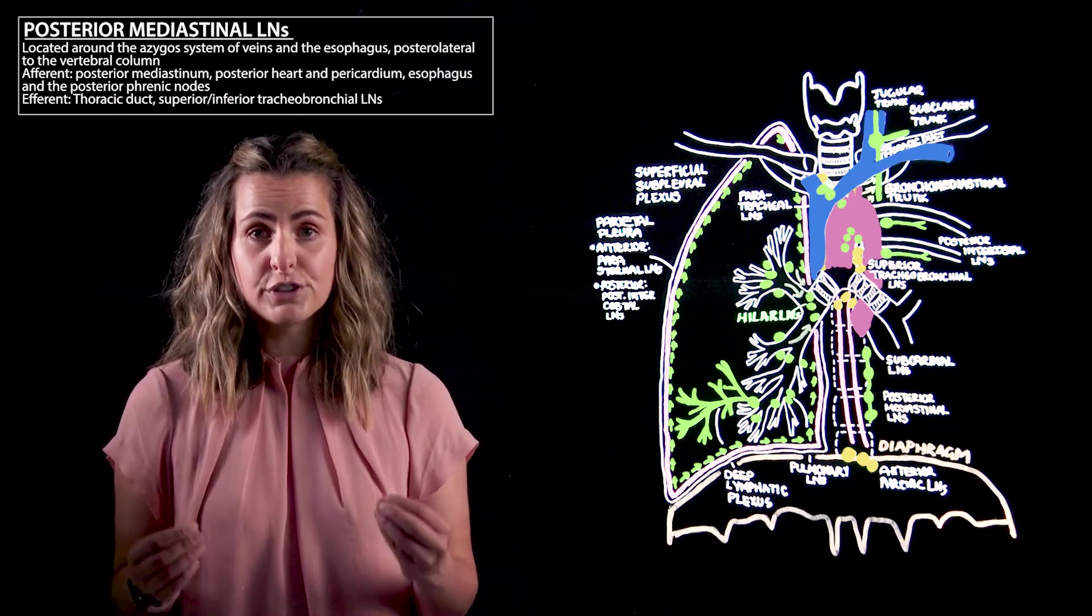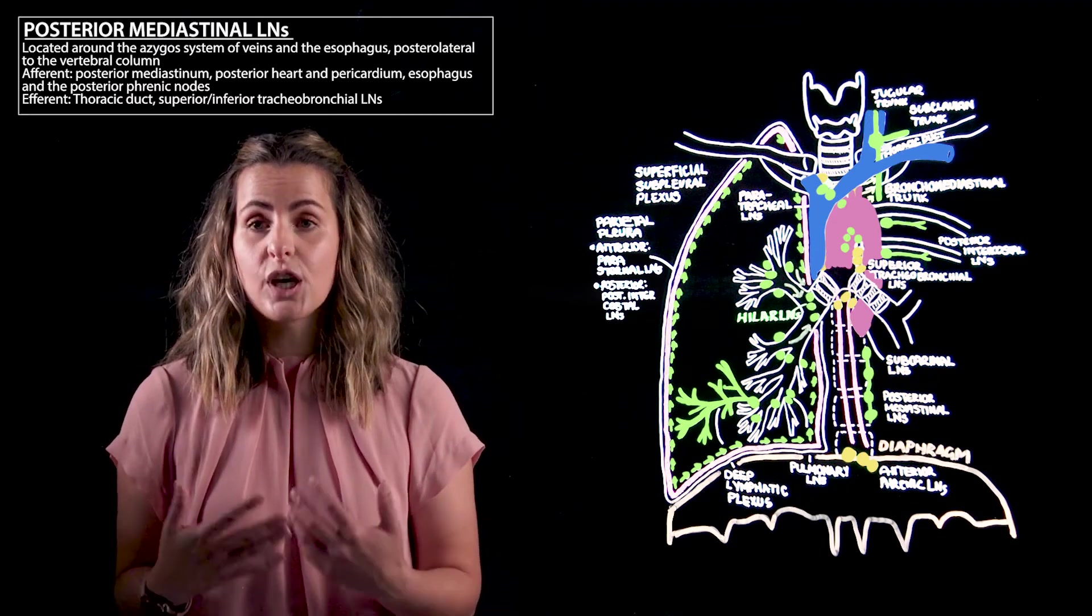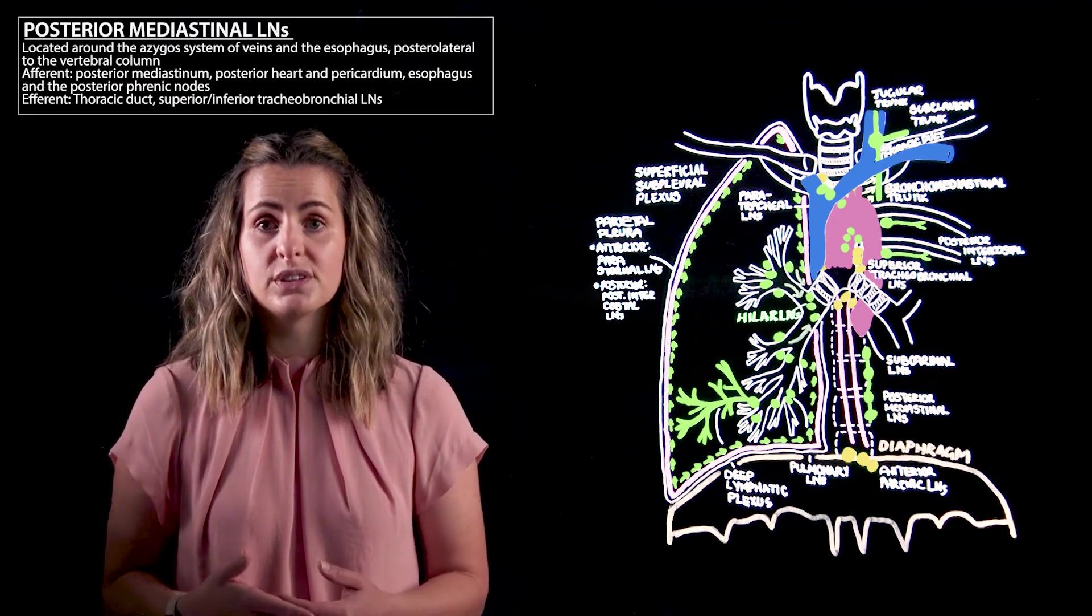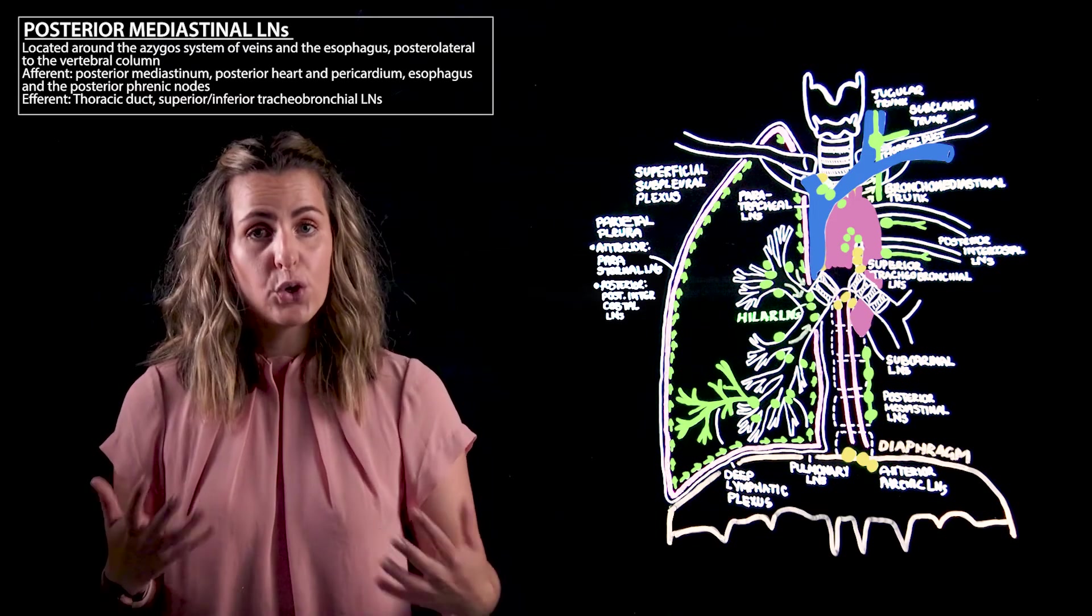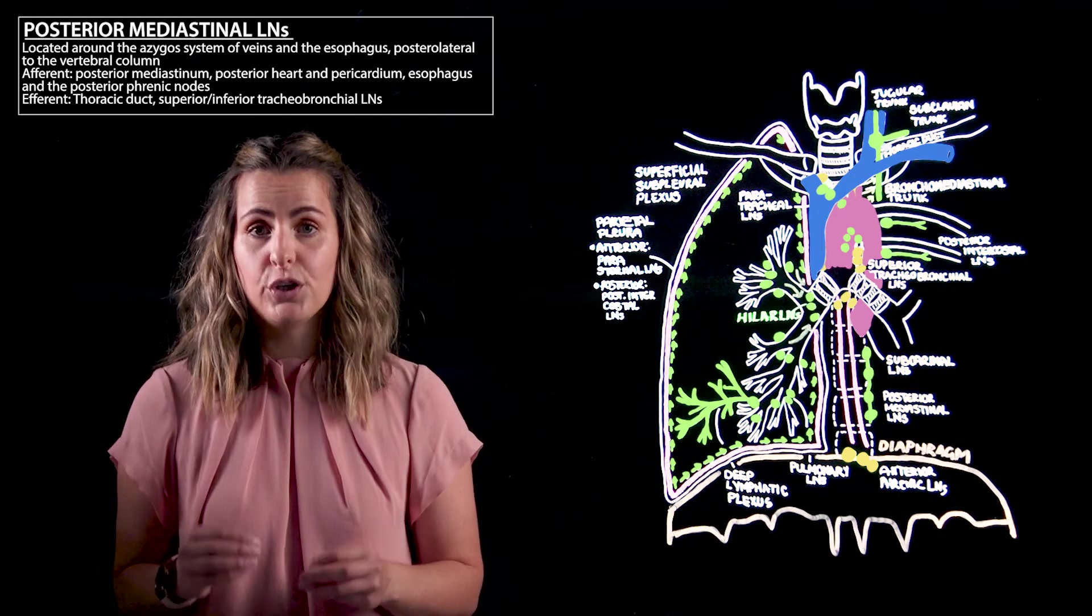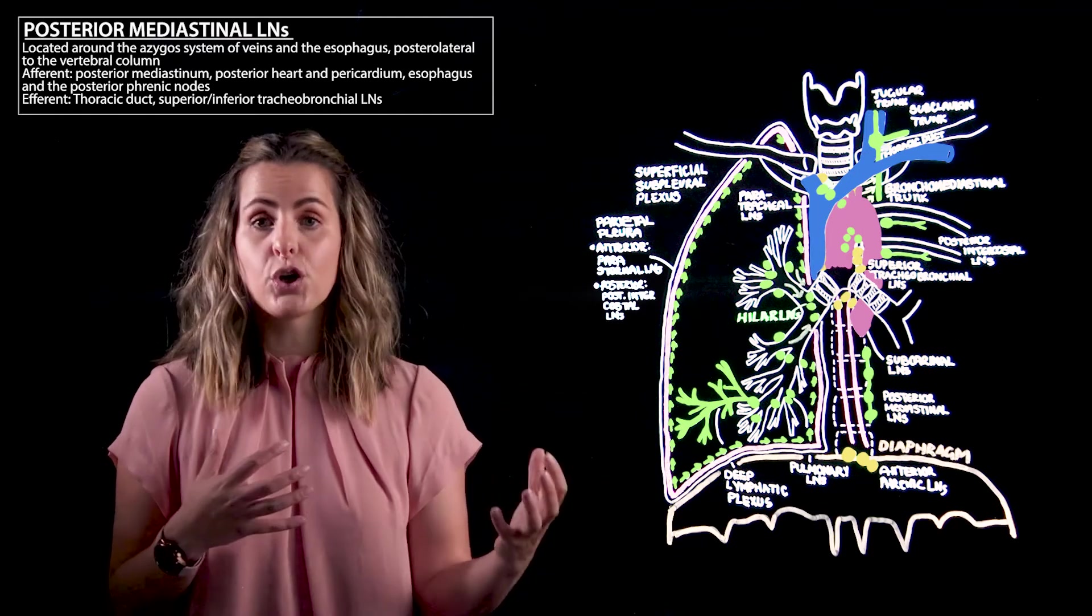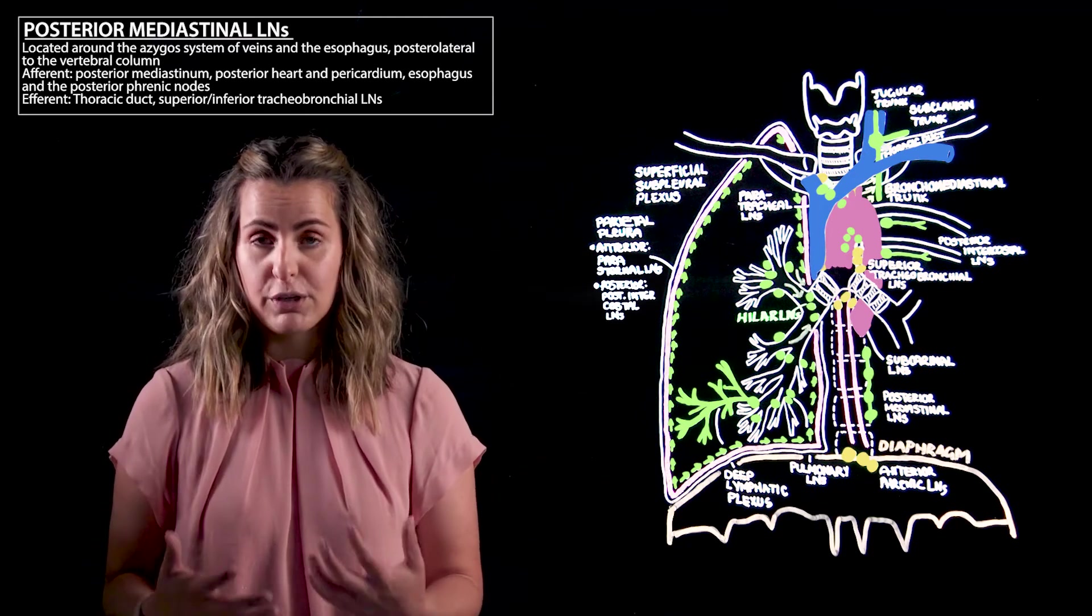If we're thinking about the efferent drainage of the posterior mediastinal nodes, this is going to predominantly be towards the thoracic duct, but it can also drain lymph into the superior or inferior tracheobronchial lymph nodes. Remember at that point of the bifurcation of the trachea depending on the location that lymph is coming from.